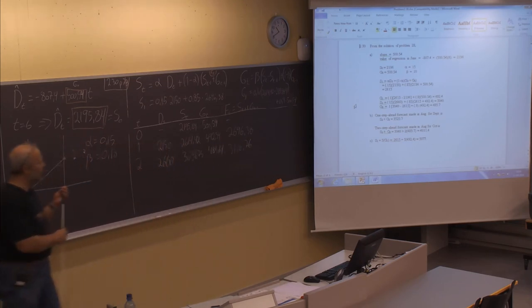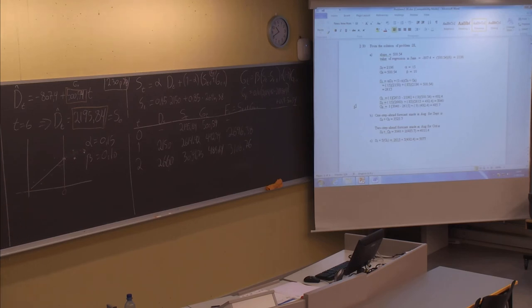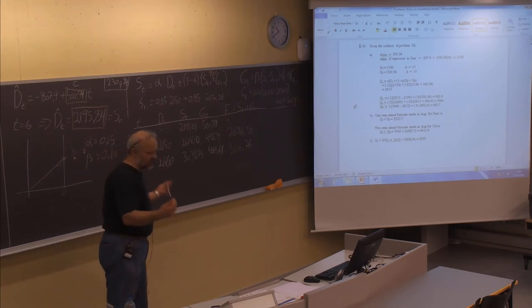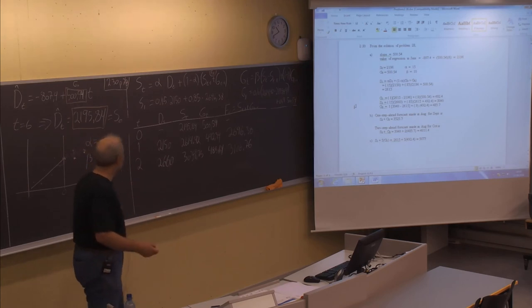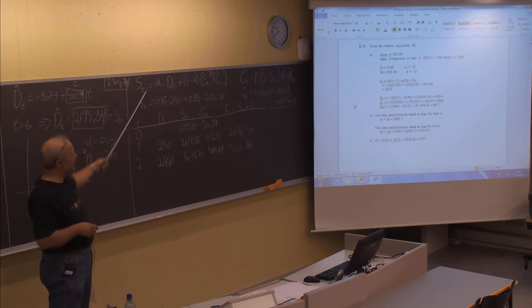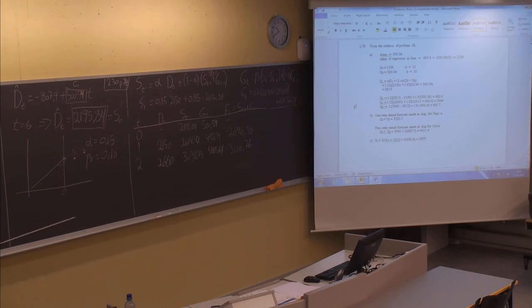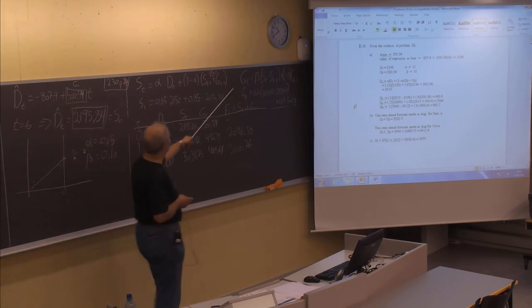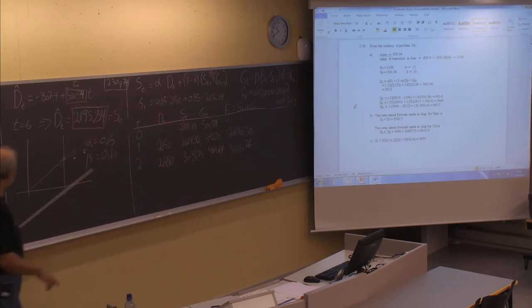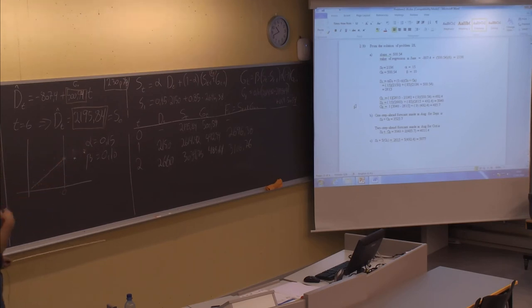We have now seen examples of forecasting methods for stationary series — moving averages and single exponential smoothing with one smoothing constant alpha — and for trend-based series: first regression analysis to find a formula, then double exponential smoothing, or the Holt's method, which updates S and G after each new data point to forecast the trend into the future.